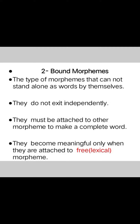Type number two: bound morphemes. These are the type of morphemes that cannot stand alone as words by themselves. They are always used with some other free morphemes, particularly lexical morphemes. They do not exist independently; they must be attached to another morpheme to make a complex word, and they become meaningful only when attached to a free lexical morpheme.